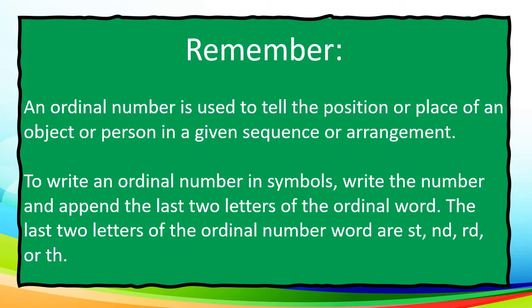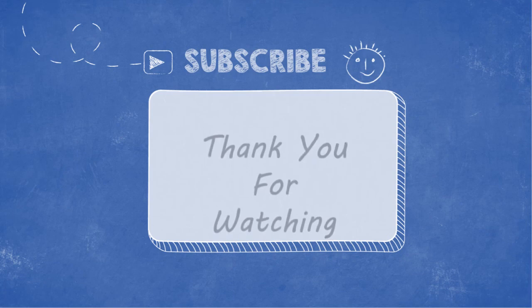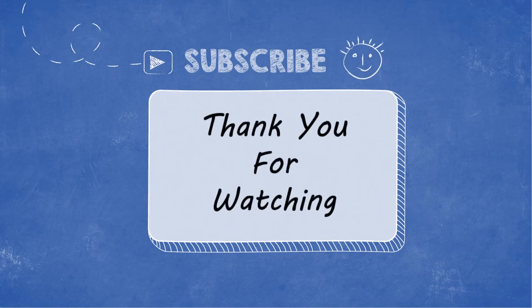You need to remember that an ordinal number is used to tell the position or place of an object or person in a given sequence or arrangement. To write an ordinal number in symbols, write the number and append the last two letters of the ordinal word. The last two letters of the ordinal number word are ST, ND, RD, or TH. I hope you learned something from our lesson today. Thank you for watching. See you again.